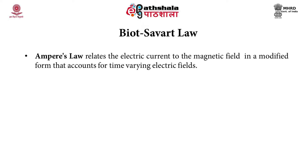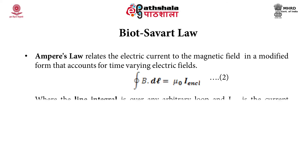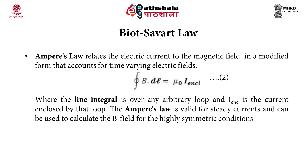Ampere's law relates the electric current to the magnetic field in a modified form that accounts for time-varying electric fields. In this equation, the line integral is over any arbitrary loop and I-enclosed is the current enclosed by the loop. This law is valid only for steady currents and can be used to calculate the magnetic field for highly symmetric conditions.